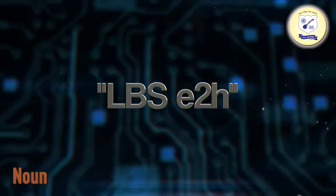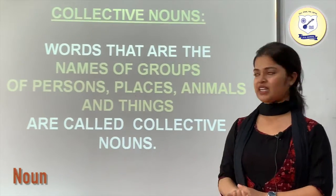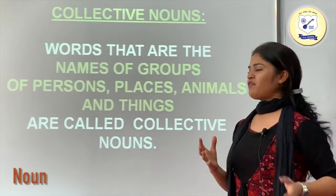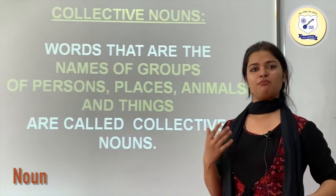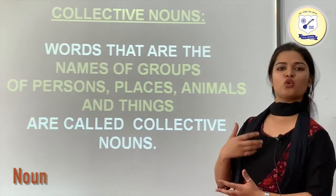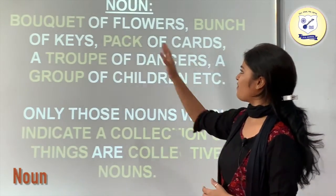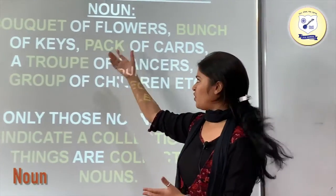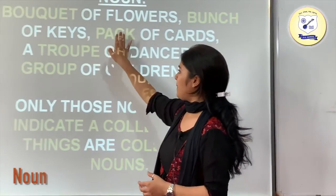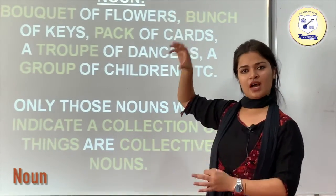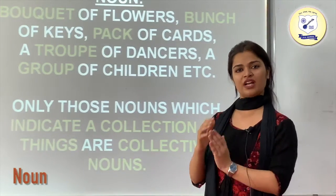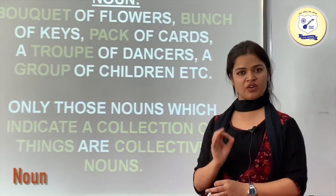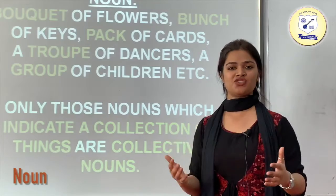Now we have collective nouns. Words that are the names of groups of persons, animals or things are known as collective nouns. For example, a bouquet of flowers, a bunch of keys. The highlighted words — bouquet, pack, troop, group, bunch — specify that we are talking about a collection. Only those nouns which indicate a collection of things are known as collective nouns.